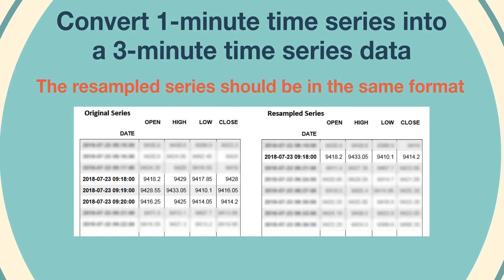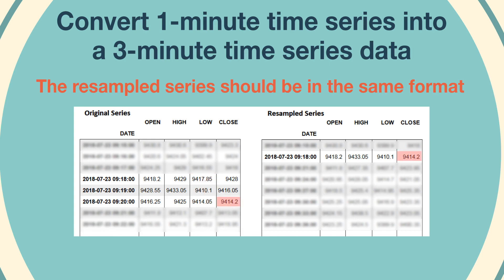This means that the open price in the resampled series needs to correspond to the open price of the first one minute bar out of the three one minute bars used for resampling. The high in the resampled series needs to be equal to the highest price of the three one minute bars. Similarly, the low needs to be equal to the lowest price of the three one minute bars. The close price in the resampled series needs to correspond to the close price of the last one minute bar of the three one minute bars used for resampling.